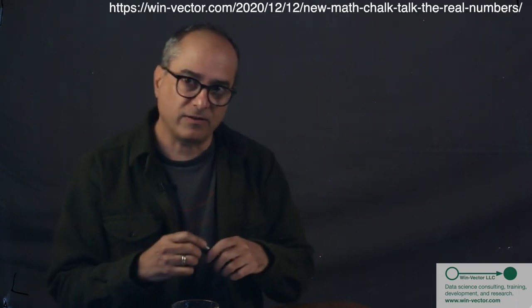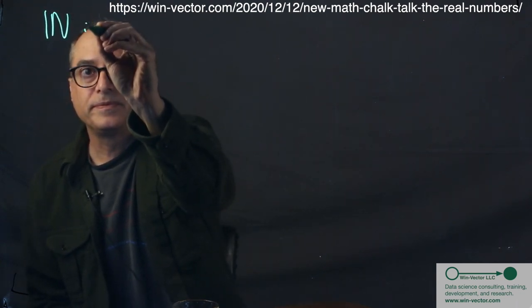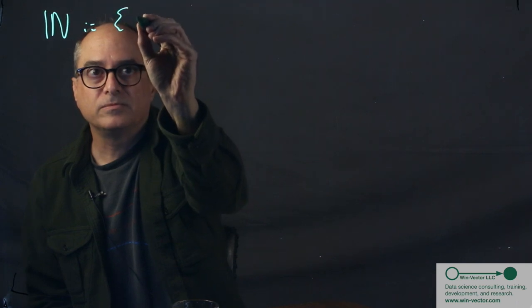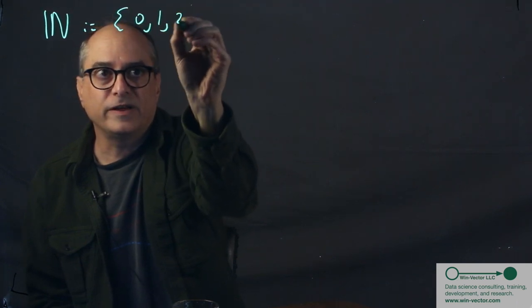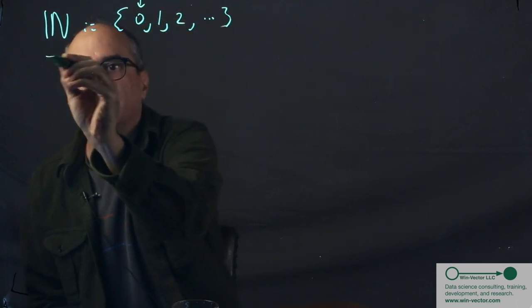In our previous Chalk Talks, we talked about mathematical numbering systems, such as the natural numbers, and we can decide whether there's zeros in them or not. That's sometimes optional. The integers,